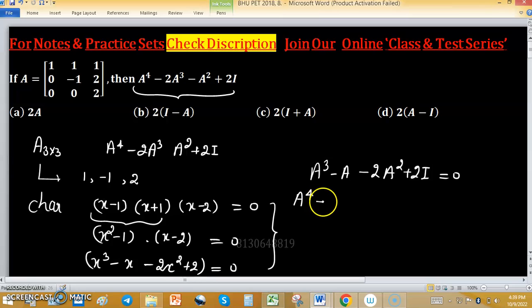So, A raised to the power 4 minus A square minus 2A cube plus 2 times A equals to 0.